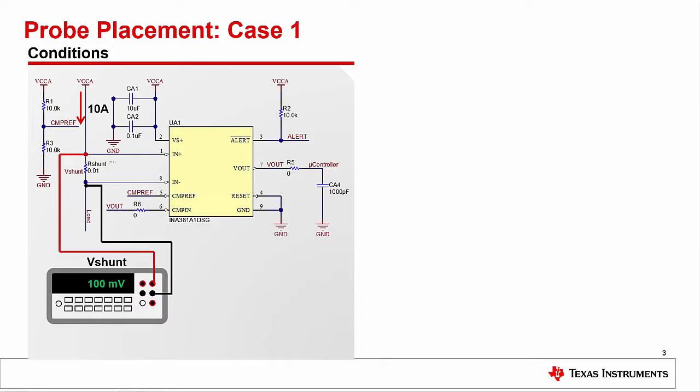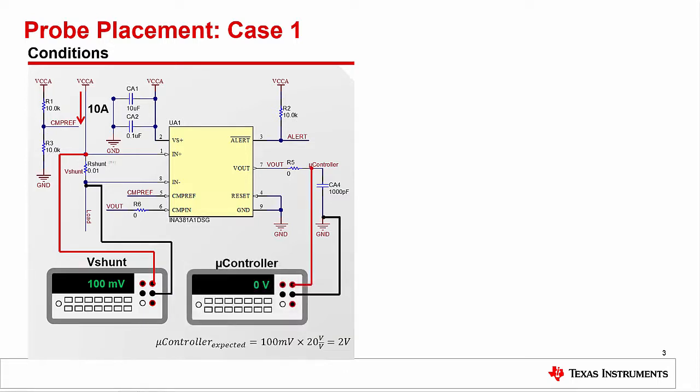Yet, when we probe at our microcontroller input test point, which is short of the Vout with the zero-ohm resistor, we get roughly zero volts. Our initial reaction is, our part is broken. However, is this a valid assumption? Technically, we are not probing directly at the device output pin, which is one of the necessary steps for verifying our device is broken.